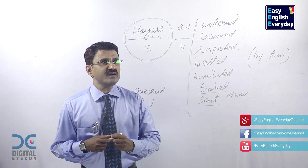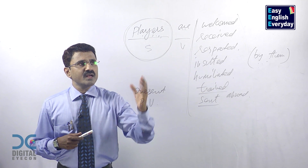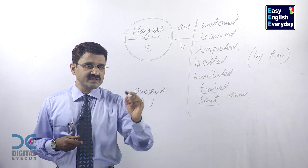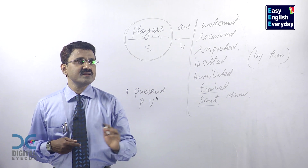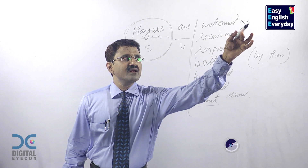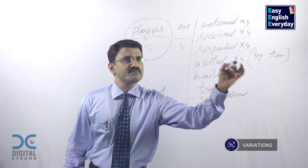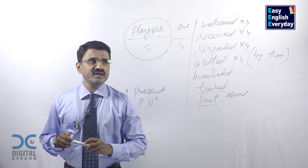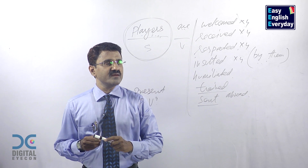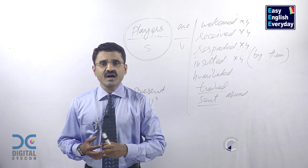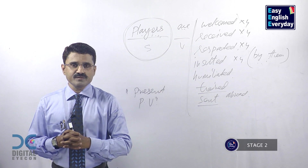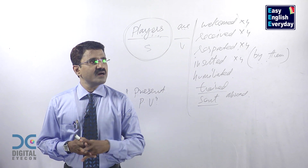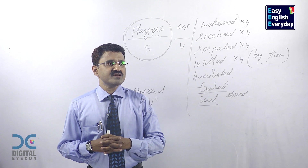Once you develop the confidence of making sentences with past participle forms — that is, present tense passive voice — go to stage two and learn the four forms of every example. Players are welcomed. Players are not welcomed. Are players welcomed? Aren't players welcomed? Players are received by them. Players are not received by them. Are players received by them? Aren't players received by them? Players are respected in every country. Players are not respected in every country. Are players respected in every country? Aren't players respected in every country?